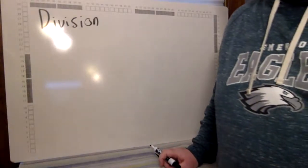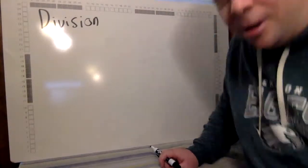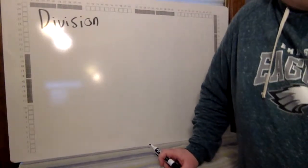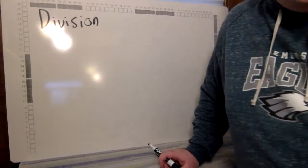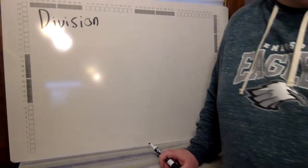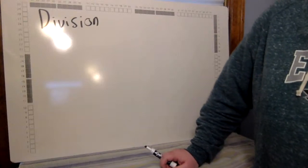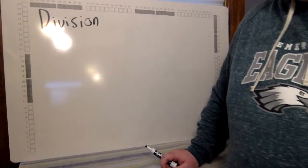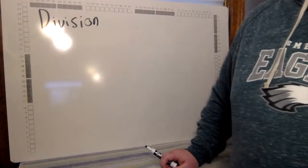Good morning boys and girls, it's Mr. Carney back with another episode of remote learning. Today's episode is going to be on division. Division is repeated subtraction, so all that means is that if you have a big number and another number you want to divide it by, you're going to count how many times you would repeatedly subtract one number from another number.